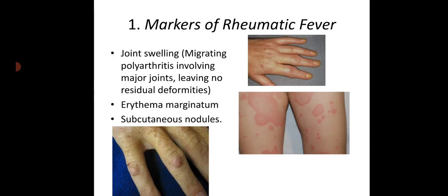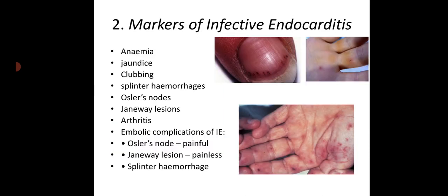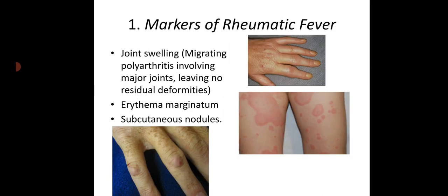For markers of rheumatic fever, look for joint swelling in migrating polyarthritis involving major joints and leaving no residual deformities. Also look for erythema marginatum and subcutaneous nodules, which are markers of rheumatic fever.